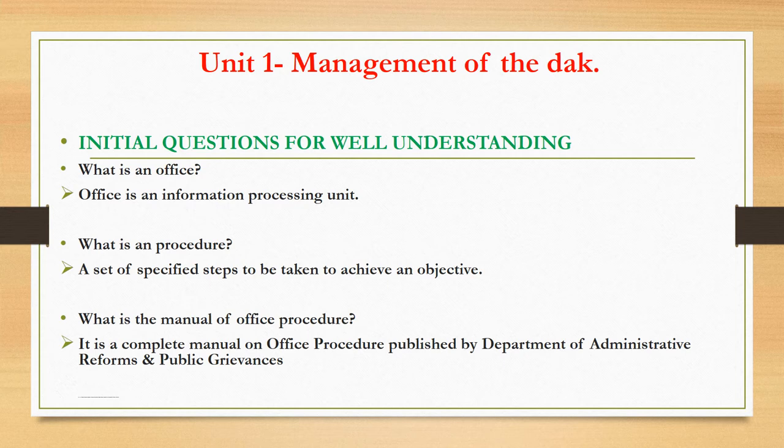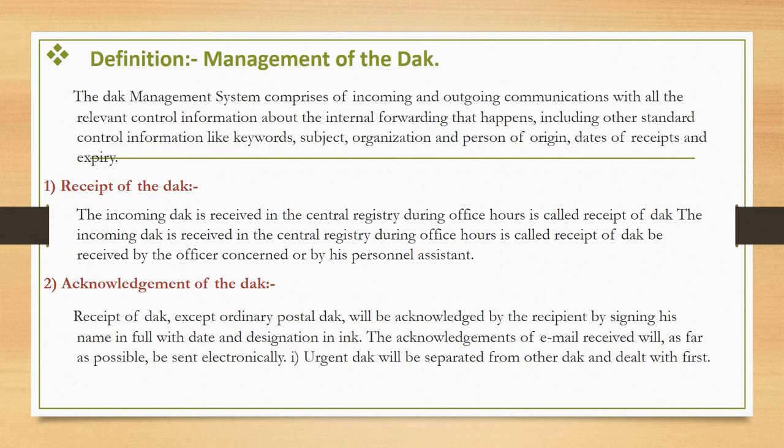The DAC management system comprises incoming and outgoing communication with all the relevant control information about the internal forwarding that happens, including other standard control information like keywords, subject, organization and person of origin, and dates of receipt and expiry. Dark management means: in any department, dark management maintains the incoming and outgoing correspondence records, keeps records of all documents, and tracks incoming and outgoing correspondence.